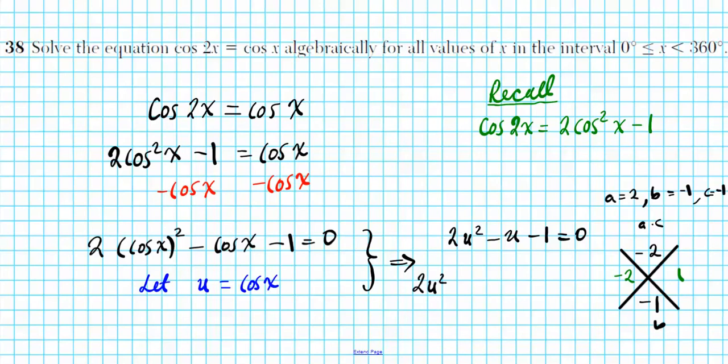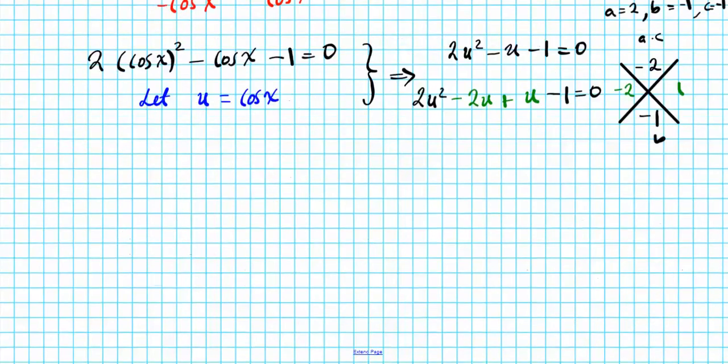So we have 2u squared minus 2u plus 1u, just write u, that's good enough, minus 1 equals 0. Now let's finish this up. We're going to factor by grouping, so I'm going to divide down the center right here. Take a look at the first two terms to the left of your partition. What is the GCF? What can I factor out? I can factor out 2u and you're left with u minus 1. Now take a look at the two terms to the right of your partition. What's the GCF? I can take out 1 and then we're left with u minus 1 equals 0.